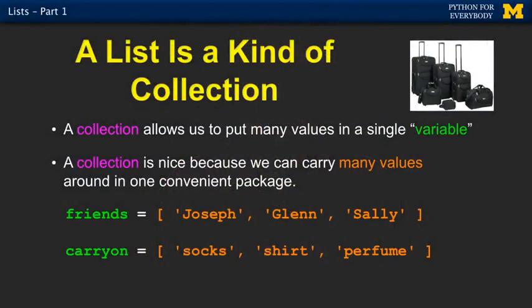A list is a collection, meaning that in a single variable we can have more than one thing. We've actually been using lists all along. When we see the square bracket syntax, we've been using these in for statements. This is a list. Square brackets is a list constant. What you're noticing here is I can put three things, three different strings, Joseph, Glenn, and Sally, into a single variable by enclosing them in brackets.